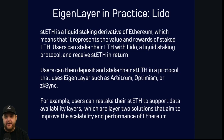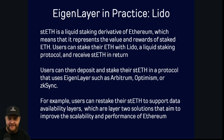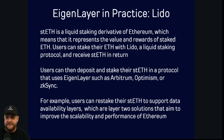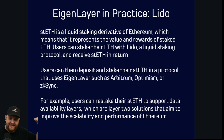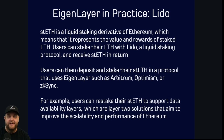So how is it actually used today? STETH is a liquid staking derivative of Ethereum, representing the value and rewards of staked ETH. You stake your ETH in Lido and receive STETH back. Once you have that STETH token, you can use it in other platforms that accept STETH, such as Arbitrum, Optimism, or ZK Sync. Users can restake their STETH to support data availability layers — layer two solutions that improve scalability and performance of Ethereum. For example, you can stake Ethereum, receive STETH, put that STETH in the Optimism bridge, receive STETH on Optimism, and participate in protocols there while your ETH remains staked back in Ethereum. This inter-network cross-chain staking is done with Eigenlayer.